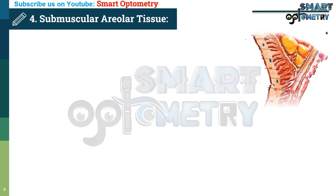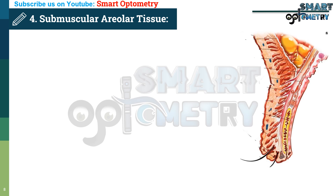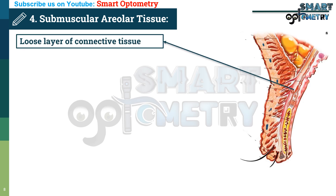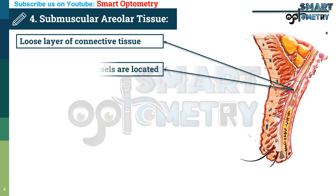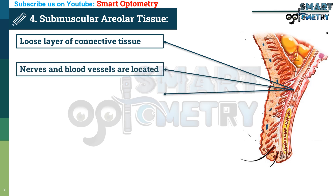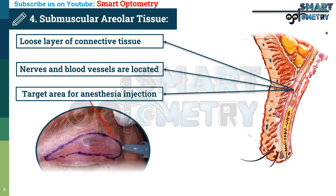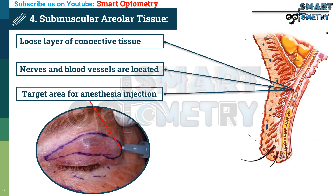Layer 4 – Submuscular Areolar Tissue. Beneath the muscle is the submuscular areolar tissue, a loose layer of connective tissue. This is where important nerves and blood vessels are located, making it the target for anesthesia injections during procedures on the eyelids.